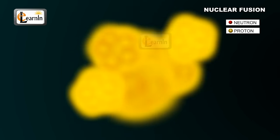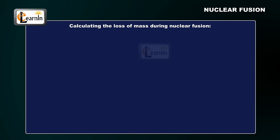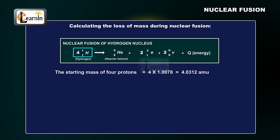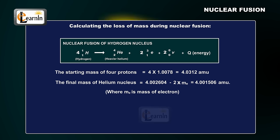To understand this, let's first calculate the loss of mass in the process. The starting mass of the four protons is 4 times 1.0078, which is equal to 4.0312 amu. But the final mass of a helium nucleus is 4.001506 amu.